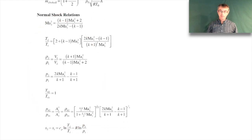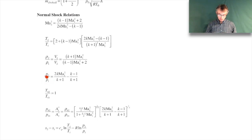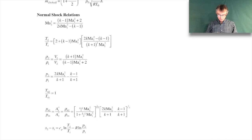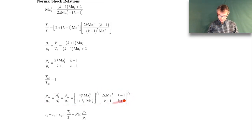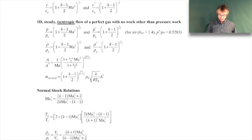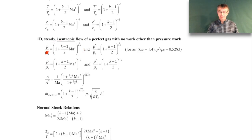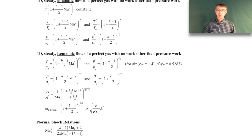Through a shock wave we can't use isentropic relations — we have to rely on the normal shock relations. Subscript 1 means upstream of the shock wave, subscript 2 means downstream. One thing to be careful of is that the stagnation pressure decreases across the shock wave. The stagnation pressure upstream of the shock is higher than downstream. When using the isentropic relations for pressure, keep in mind that P₀ is different whether you're upstream or downstream. The stagnation temperature T₀ actually stays the same across the shock wave because the shock wave is an adiabatic process.